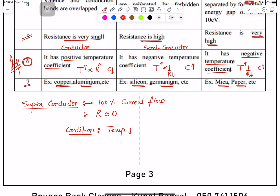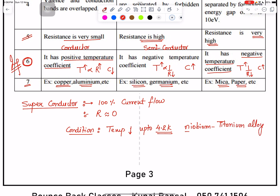The temperature must be as low as 4.2 Kelvin. At this temperature, niobium and titanium alloy — a mixture of the two — shows superconductivity, meaning 100 percent current flows and resistance is zero.